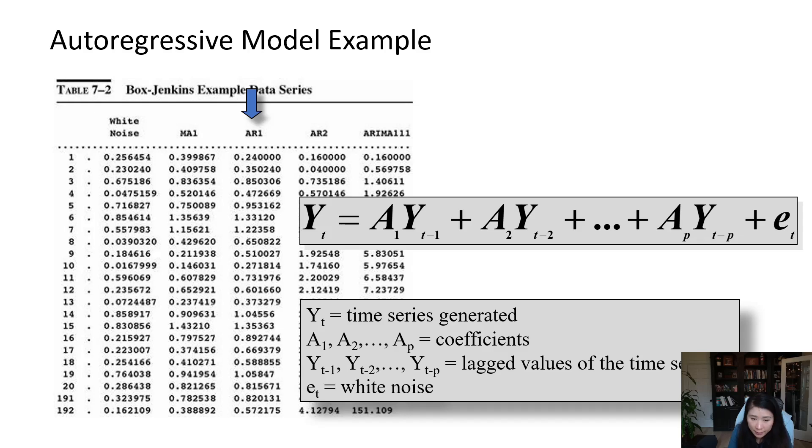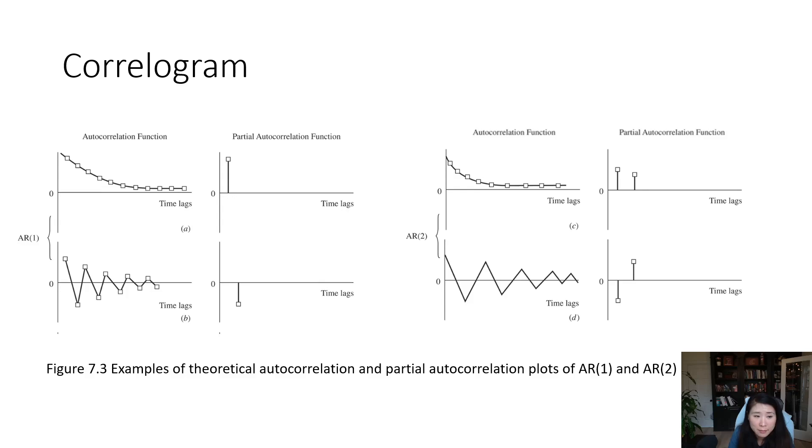Now the big question is: how many AR terms do we need, or do we need any AR terms? A similar idea we applied to the MA model we will apply to our AR model. For the MA model we rely on the autocorrelation function, which is our ACF diagram. But when we are trying to see if we need AR terms, we need to focus on the partial autoregressive function, the PACF diagram.